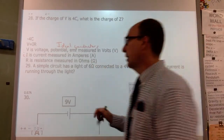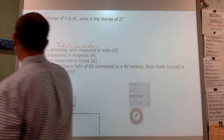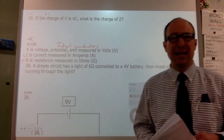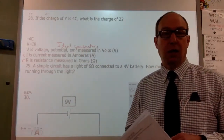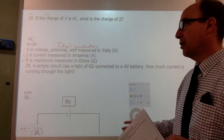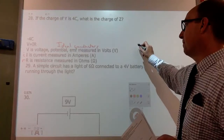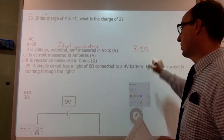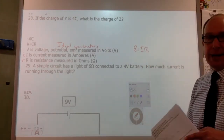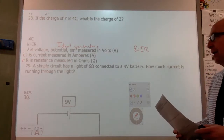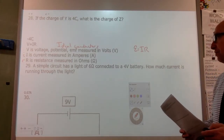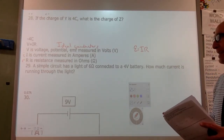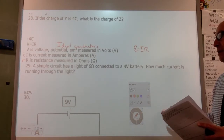R is our resistance, measured in ohms — that's a capital omega. The capital R sometimes also looks like a small r. The V is always a capital V, though sometimes you'll see it written in different forms.